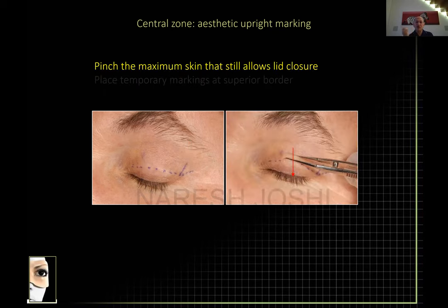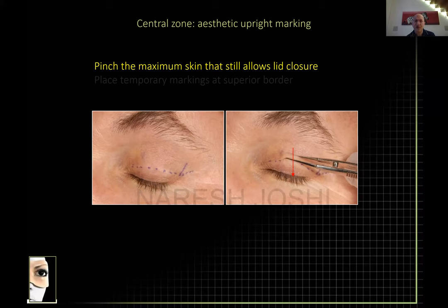Then pinch with non-toothed forceps. One important trick: most patients with hooding will have an inherent compensatory brow elevation because they're lifting the skin off their eyelid. Ask the patient to close their eyes tight before the pinch — this eliminates the hidden compensatory brow elevation. Then ask them to relax very slowly and do your pinch. That way you'll take out what is necessary; otherwise you won't take as much as you should.